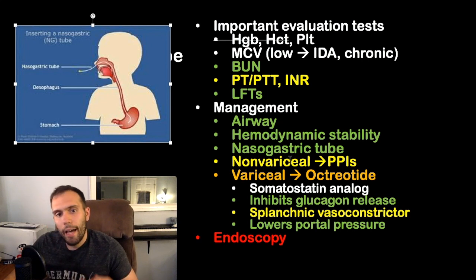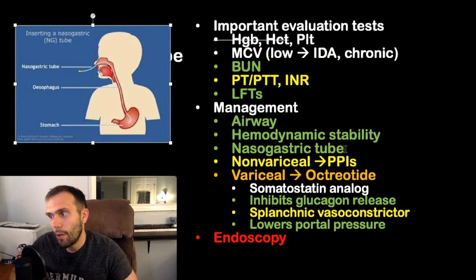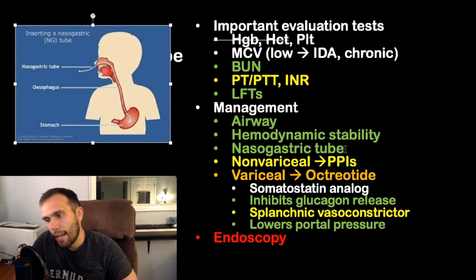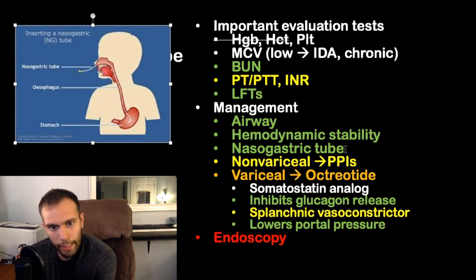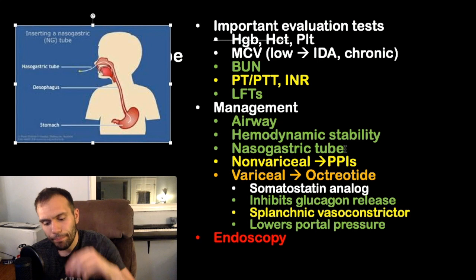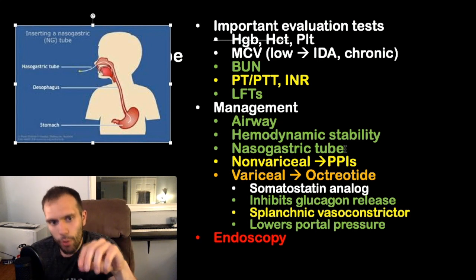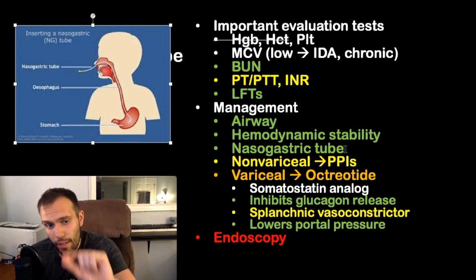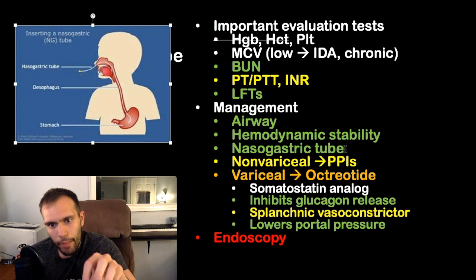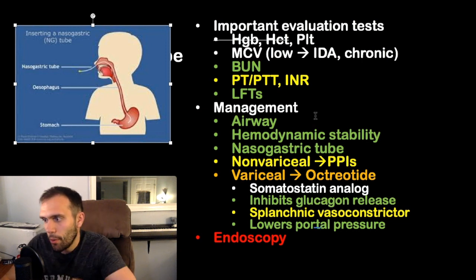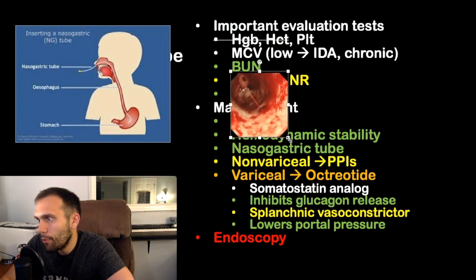For non-variceal upper GI bleeds, give PPIs. For variceal bleeds, do not give PPIs — instead use octreotide, a somatostatin analog. Octreotide inhibits glucagon release; since glucagon is a vasodilator of splanchnic tissue, inhibiting it causes vasoconstriction of the splanchnics, decreasing inflow of blood into the portal system and reducing variceal bleeding pressure. Endoscopy is both diagnostic and therapeutic.